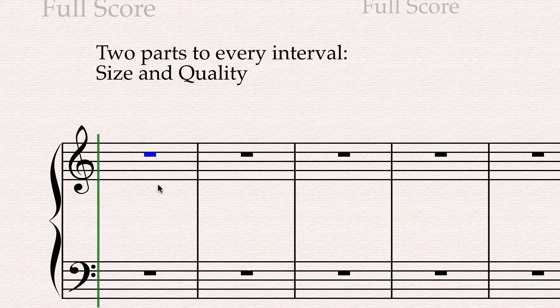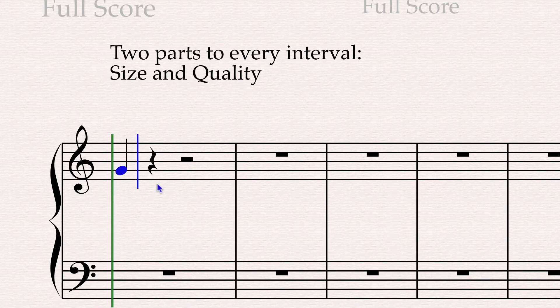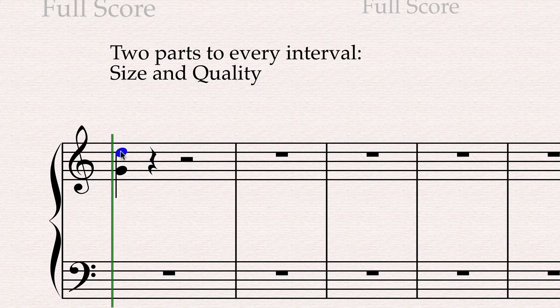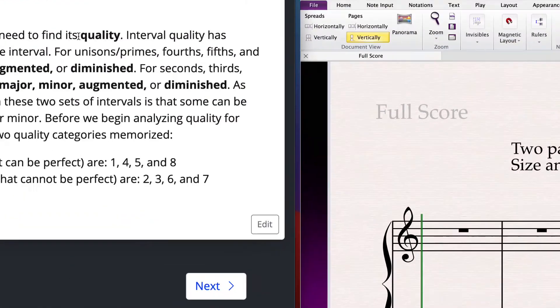We just count the total number of lines and spaces involved between two notes. So if I have a G and a D and I want to know the size of the interval of those two notes, I just count every line and space involved. I start on wherever the bottom note is, end wherever the top note is, and count 1, 2, 3, 4, 5. This must be a fifth.